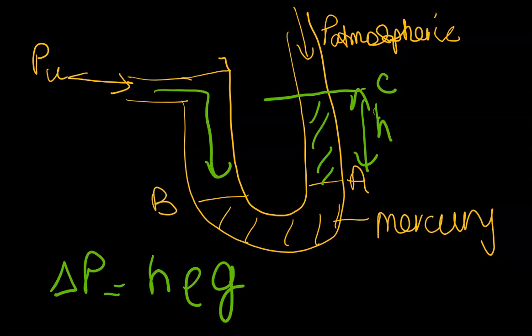When you attach whatever unknown fluid or gas or substance you want to measure the pressure of, it forces the liquid because it's experienced on the surface B at level B of the liquid, and it forces it now to push level A up to perhaps level C.